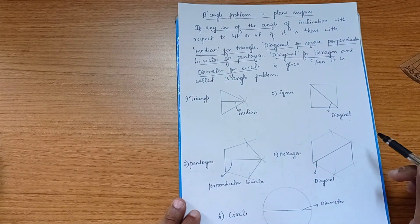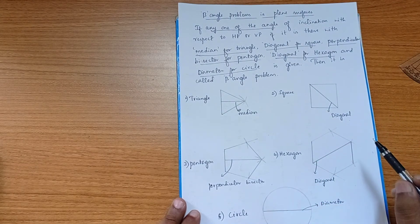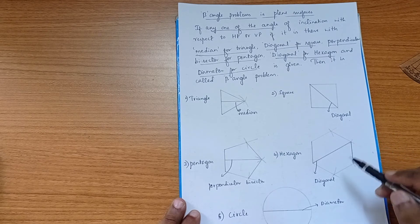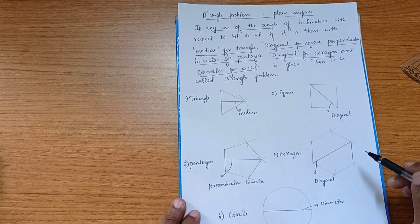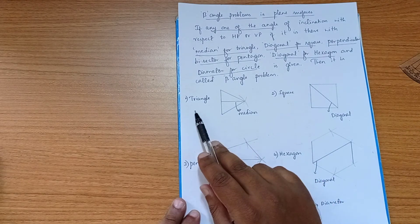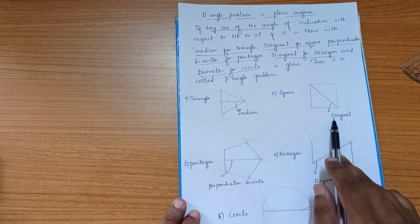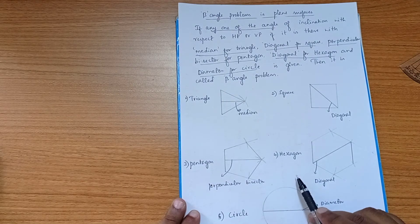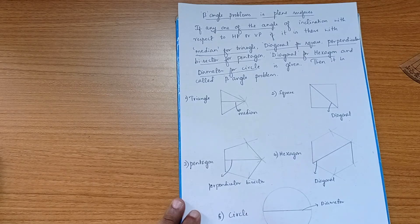So that's how we identify a beta angle problem. Remember: if any one inclination — either to the HP plane or the VP plane — is mentioned with respect to the median for triangle, diagonal for square, perpendicular bisector for pentagon, diagonal for hexagon, or diameter for circle, then it is a beta angle problem.